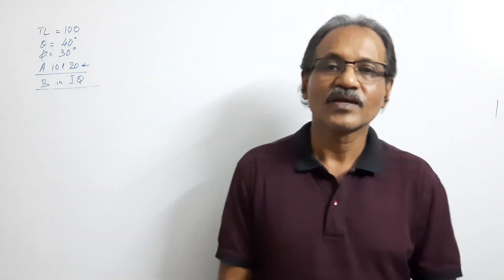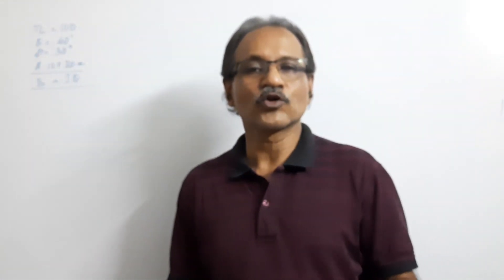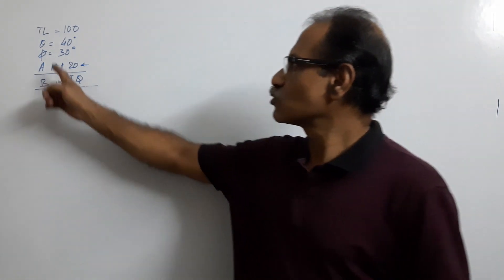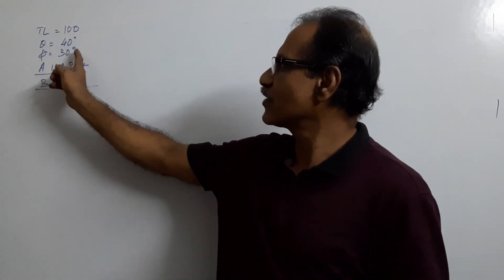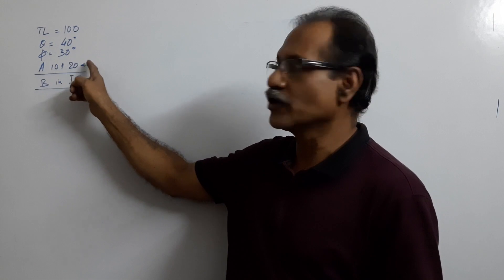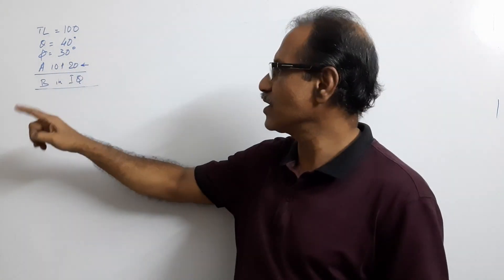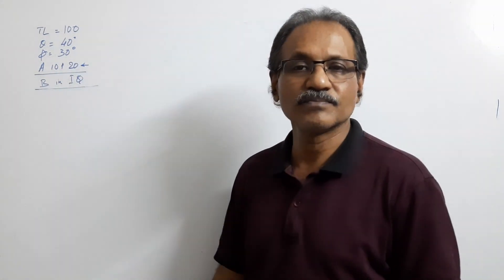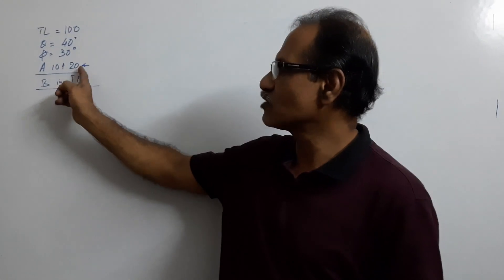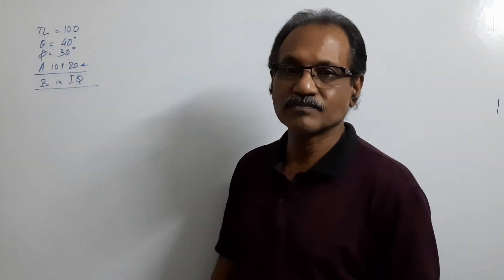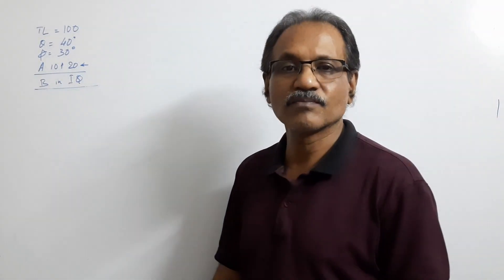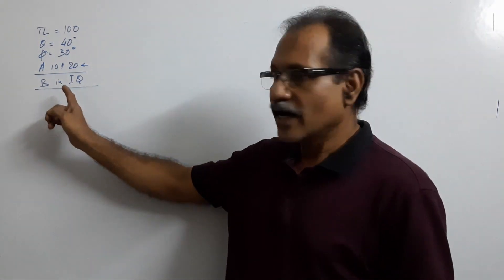Hi students, we are going to draw a new problem today. The line length is 100mm, theta is 40°, phi is 30°, point A is 10mm above HP and 20mm behind VP. End B is in the first quadrant. The true length, theta, phi, and location of end A are given. The additional constraint given is that B is in the first quadrant.